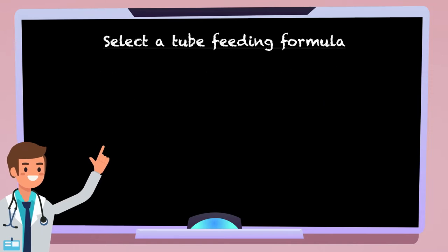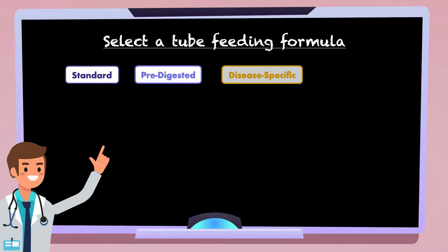Once you have established the estimated nutritional needs, the next step is to select a tube feeding formula. If you have watched my video on formula, you know there are four categories, and they are standard, pre-digested, disease-specific, and blenderized.